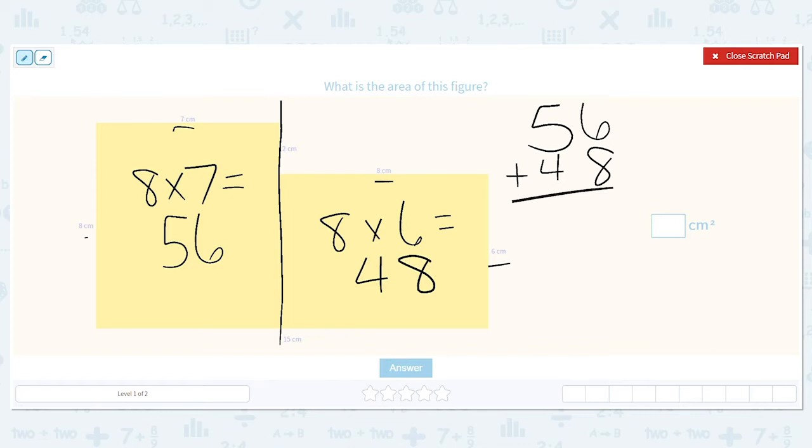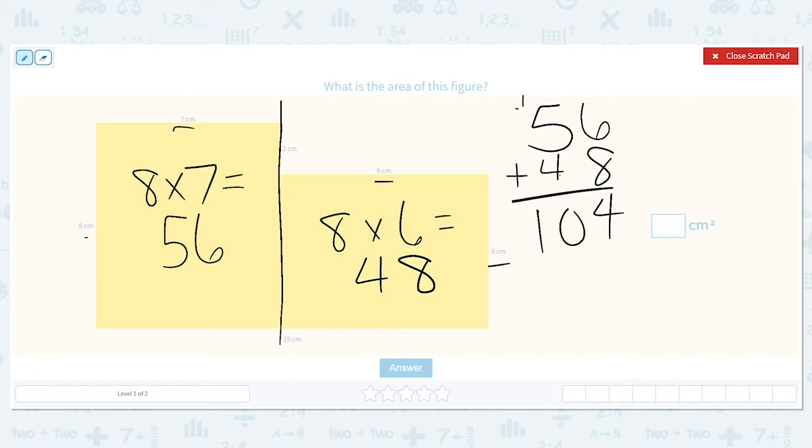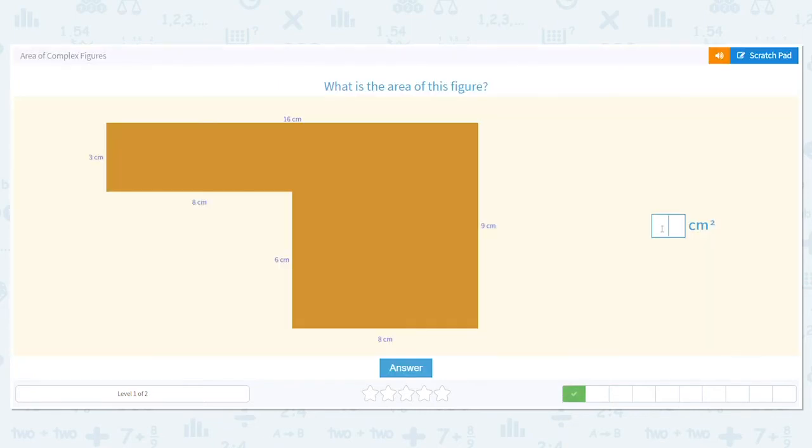So we add it up. 6 plus 8 is 14, carry my 1. 5 plus 4 is 9, plus one more is 10. So my area is 104 centimeters squared. Alright, next one.